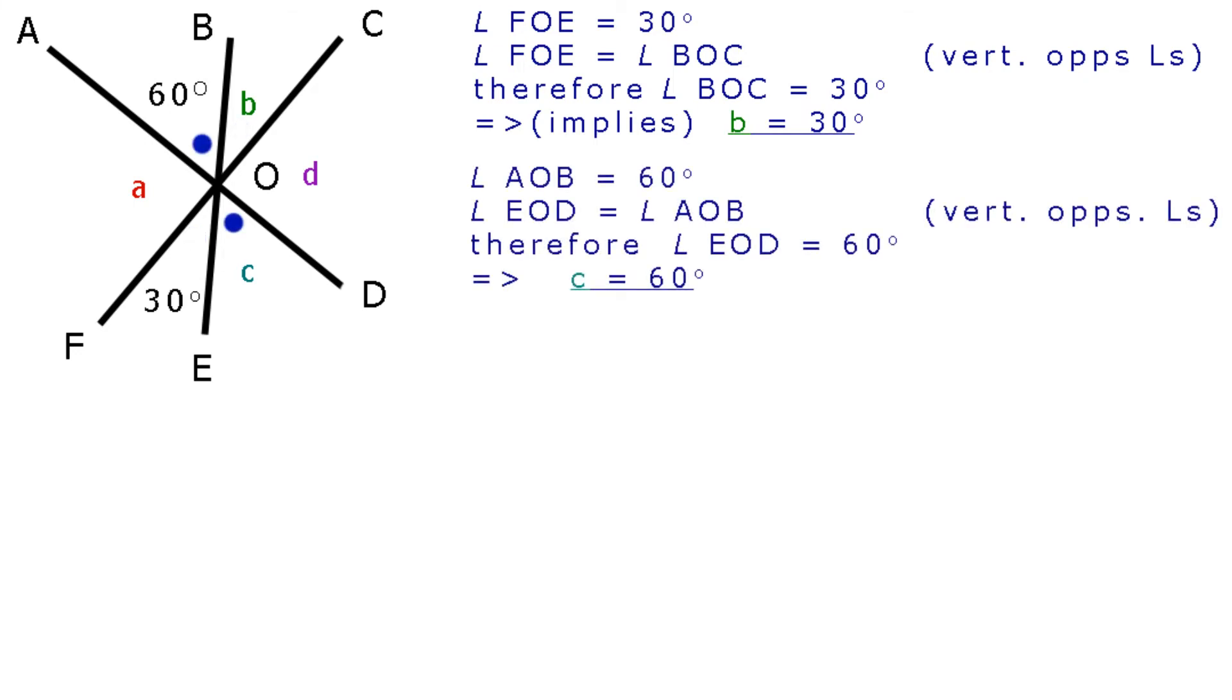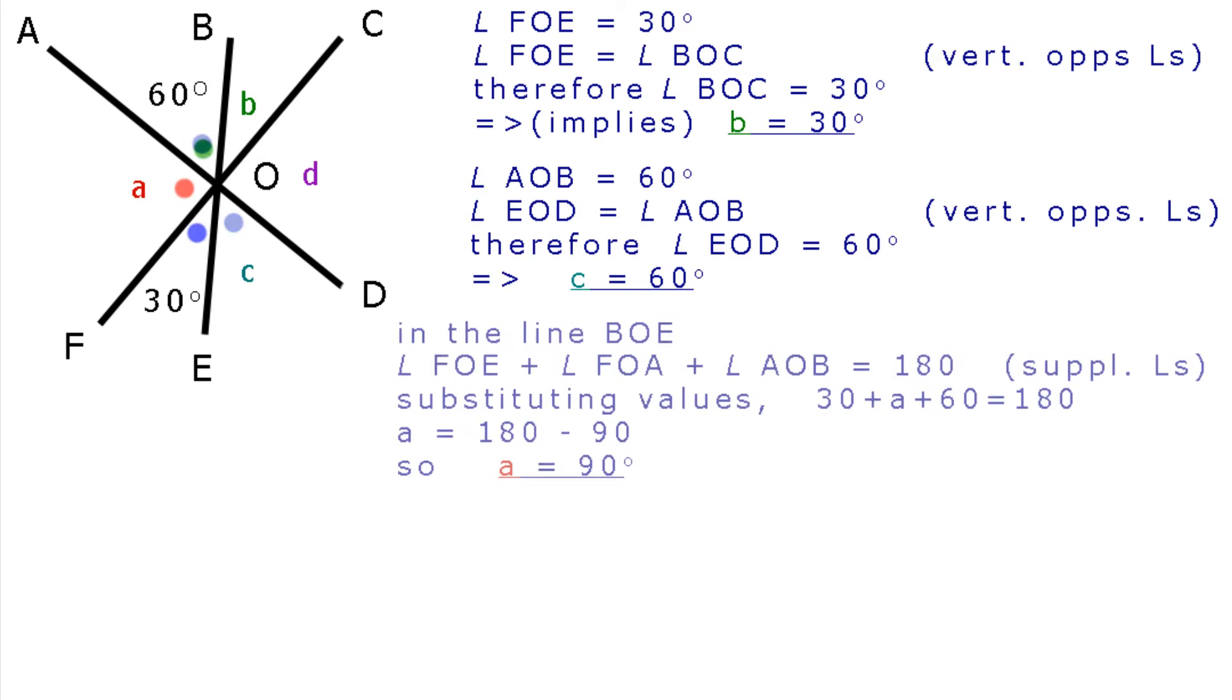Angle AOB equals 60 degrees. Angle EOD equals angle AOB, vertically opposite angles. Therefore, angle EOD equals 60 degrees, which implies that C equals 60 degrees.